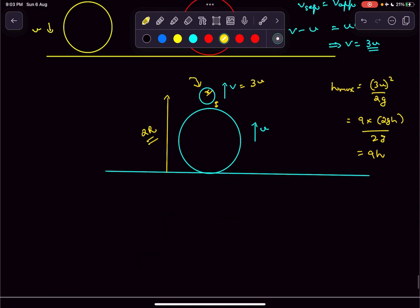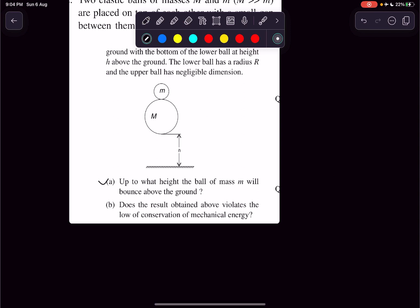So this is going to be 9 times u squared. u squared was 2gh and this comes out to be 9h. So the final answer for the h max attained by the small ball is going to be 2r plus 9h. And that was the answer to option A.